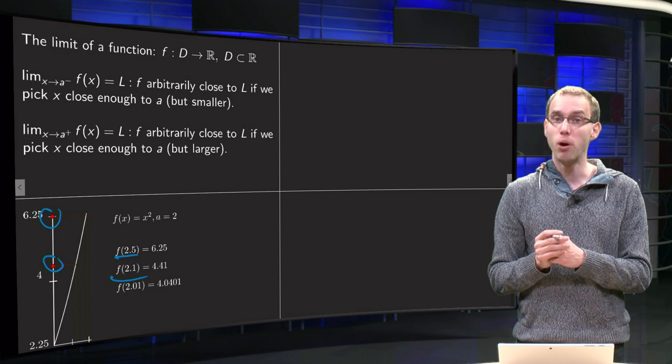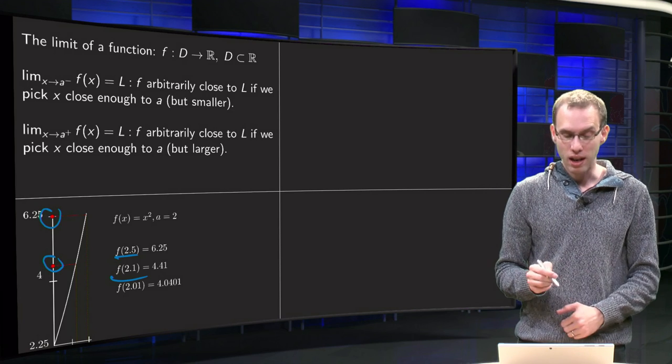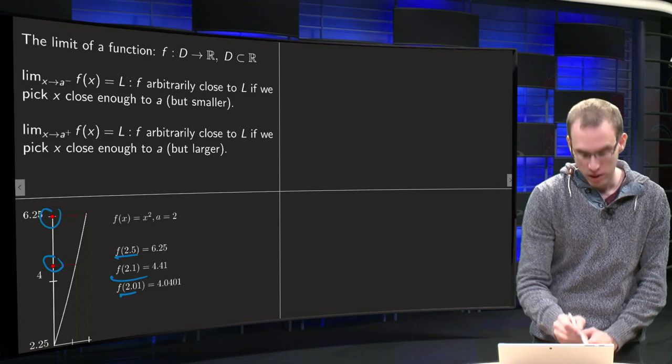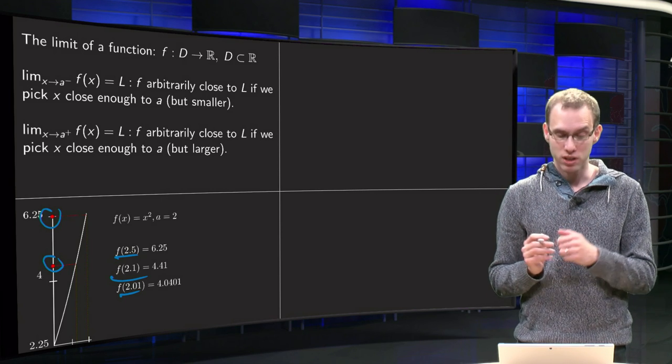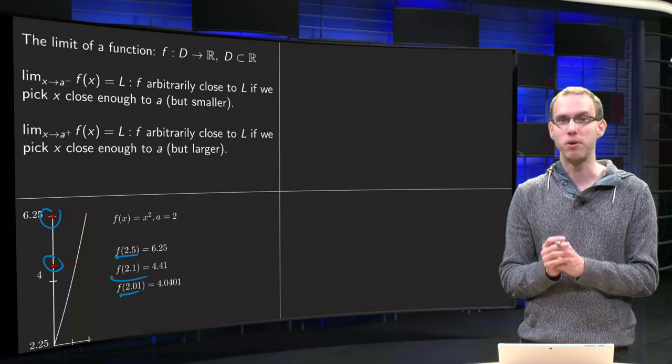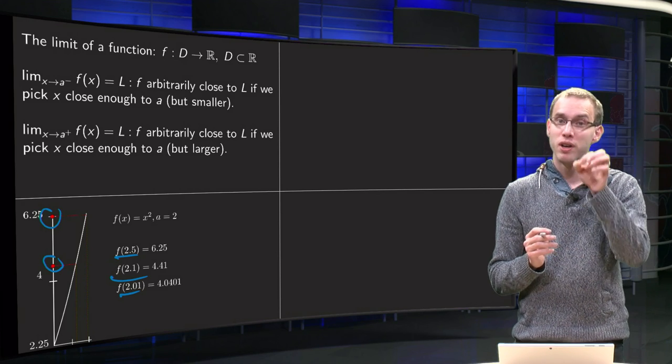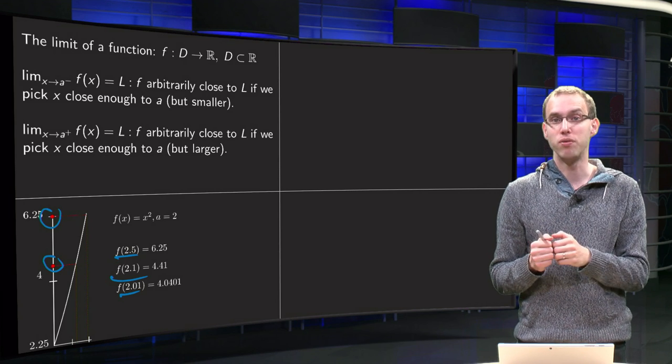And then we continue to approach, so we take smaller values but still above 2, like 2.01. And if we compute f into 2.01, we get 4.0401. Well, it's not possible anymore to draw it in this graph.